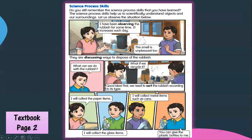Okay class, now you can look at textbook page 2. They explained about observing and classifying. This is a situation given here from a housing area. So the girl said that I have been observing the rubbish for some time. It increases each day. So the number of rubbish increasing every day. So the girl observing the rubbish. And the boy said that the smell is unpleasant too. The smell. So he used the sense of smell to observe the surroundings.